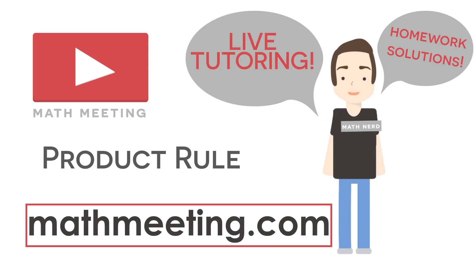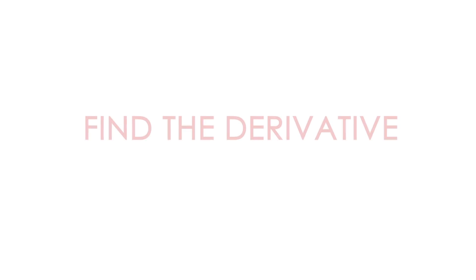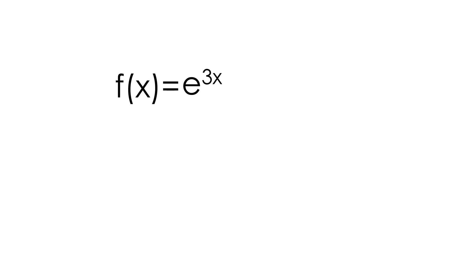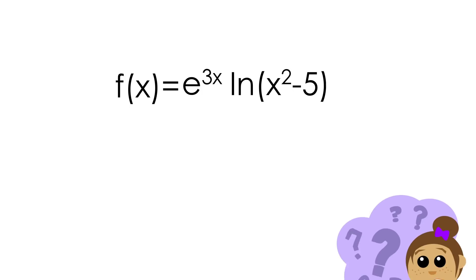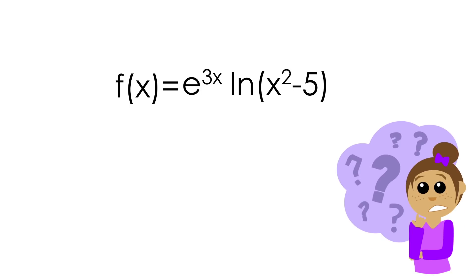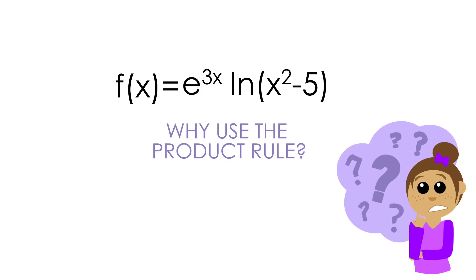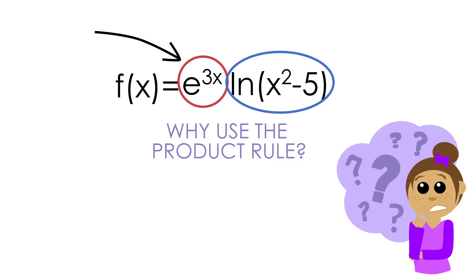Let's get started right away with this example. We have to take the derivative of the function E to the 3x multiplied by the natural log of x squared minus 5. The first thing I want to talk about is why we need to use the product rule. The simple answer is we have a product — two things being multiplied with each other. Notice how E to the 3x is being multiplied by the natural log of x squared minus 5.